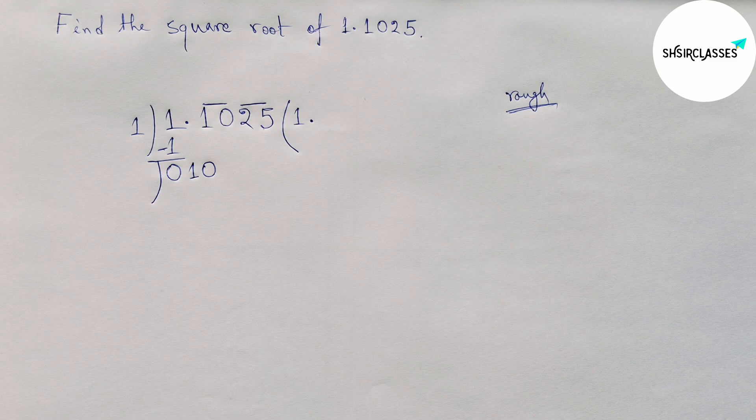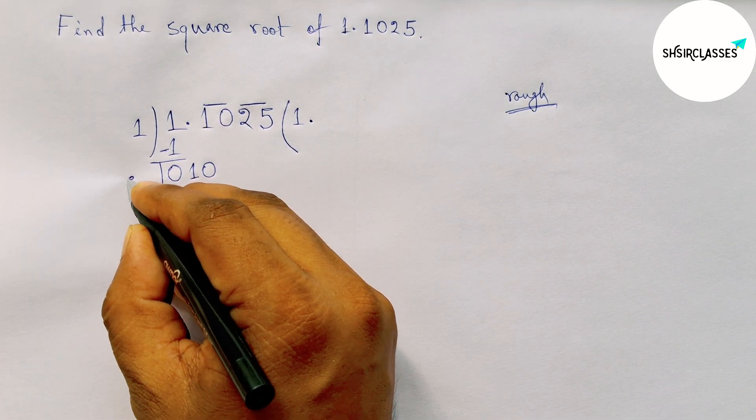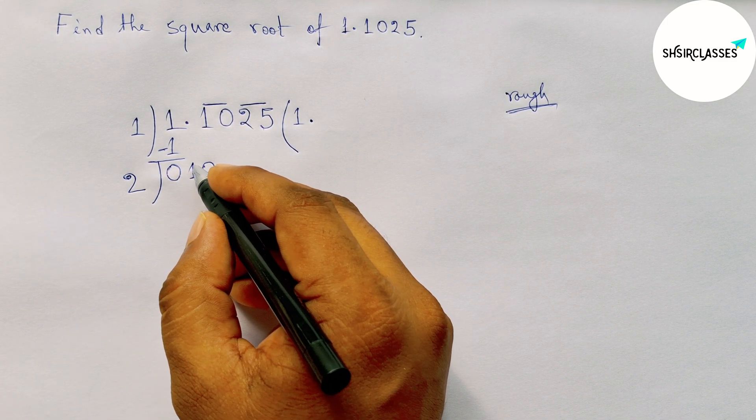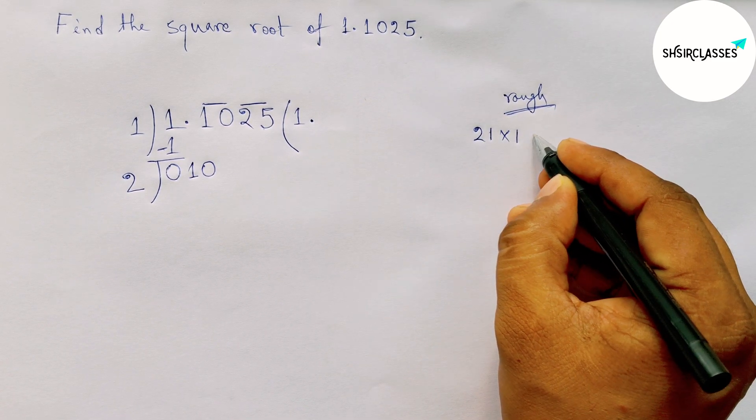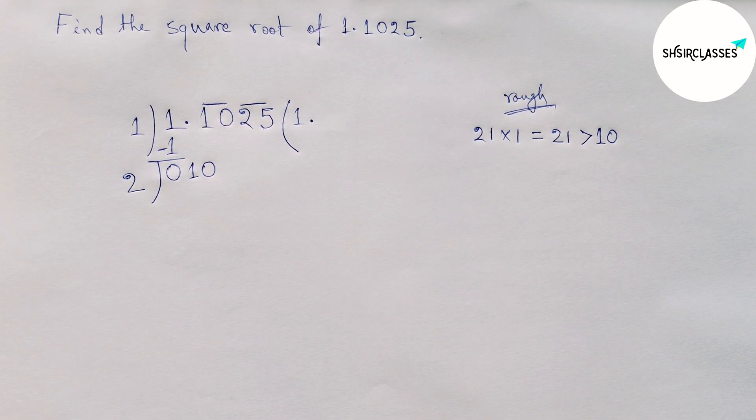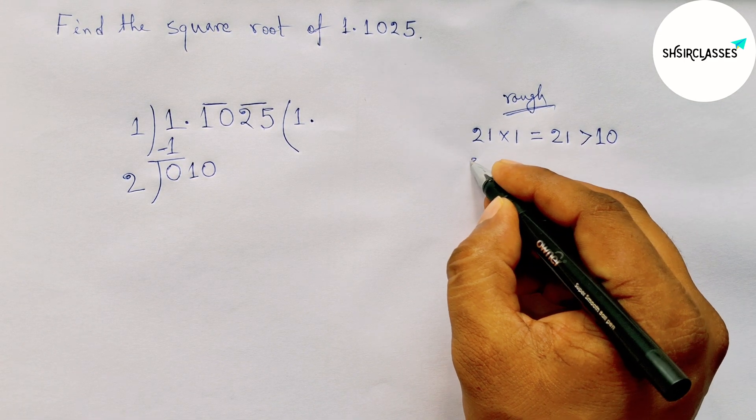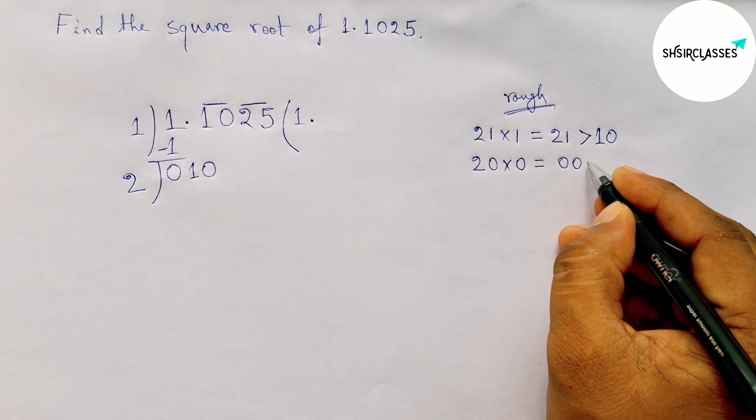So double of one equals two, and write down a number beside two and multiplying by that number which is less than or equal to 10. First checking with one, so 21 is greater than 10, so we have to take here only zero. Taking zero and multiplying by zero, so zero is less than 10.